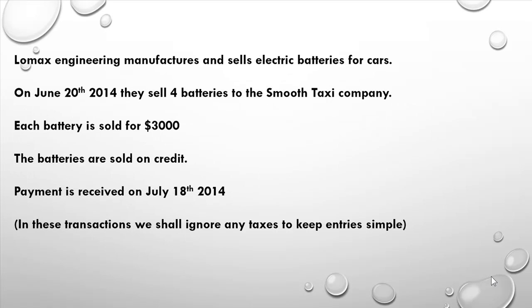Let's consider an engineering company that sells electric batteries. In June they sell four batteries at $3,000 a piece — that's $12,000 — and the batteries are sold on credit. They receive payment for the batteries in July of that year. To keep things simple, we're going to ignore any taxes in these transactions.